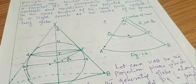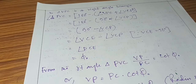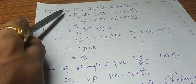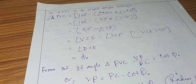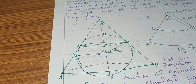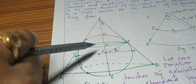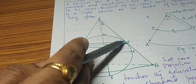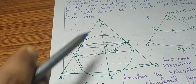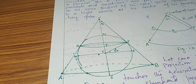So we obtain angle VPC. Triangle VPC is a right-angle triangle because the cone touches the globe at P creating a 90-degree angle there. Let us now look at the further derivation from this right-angle triangle.